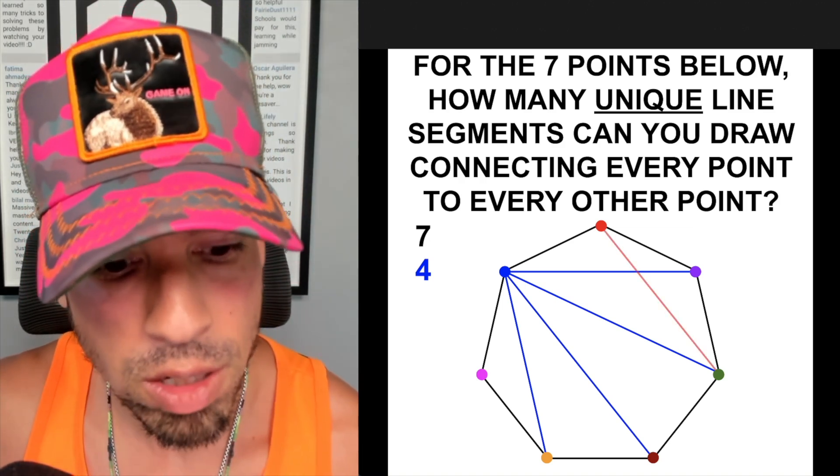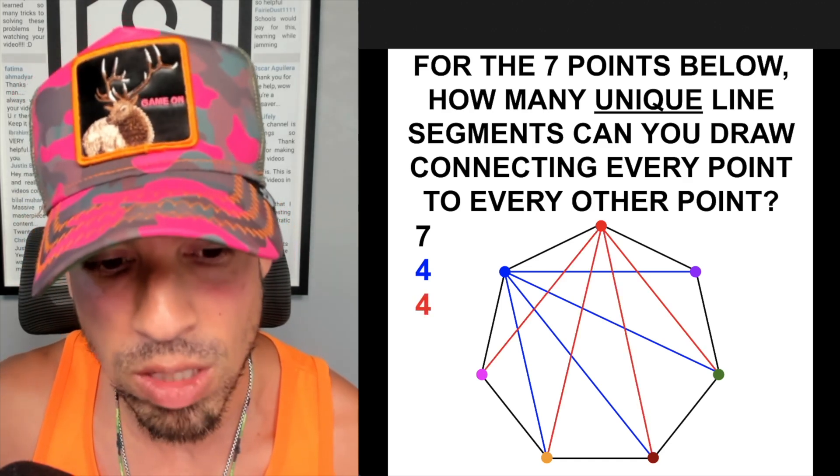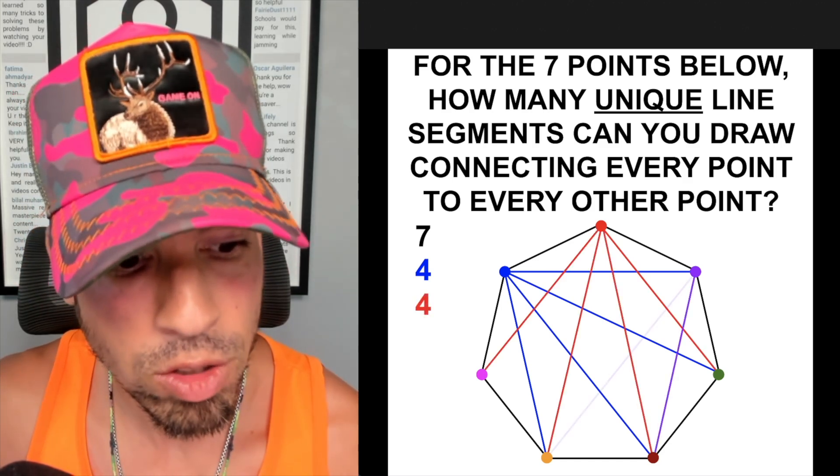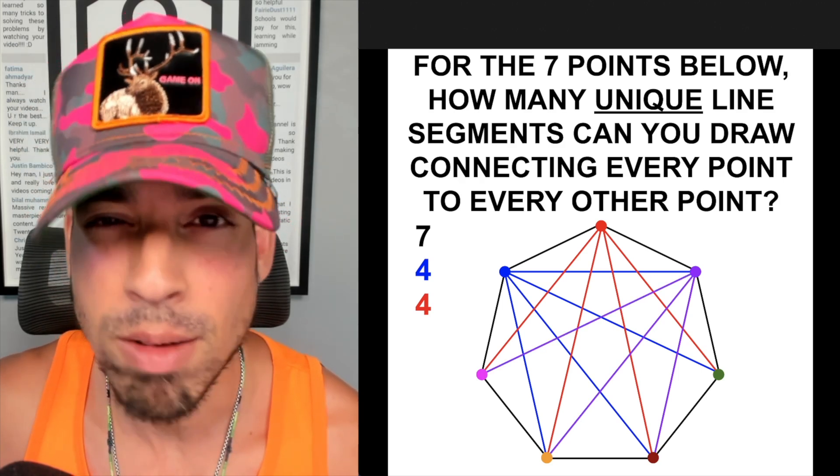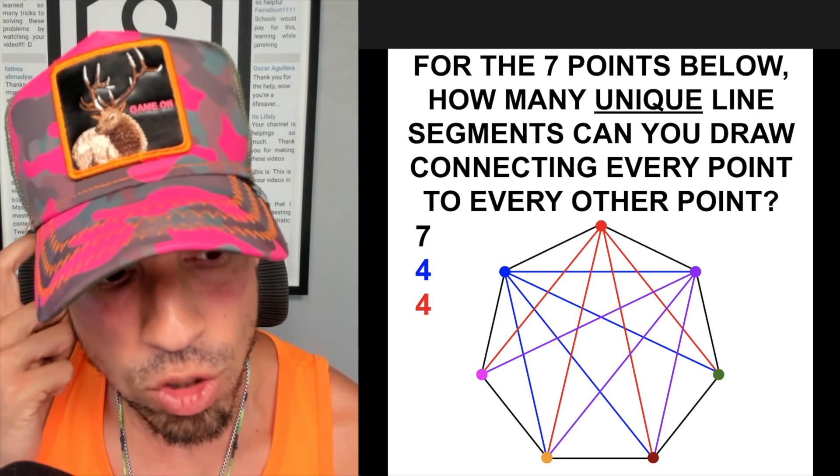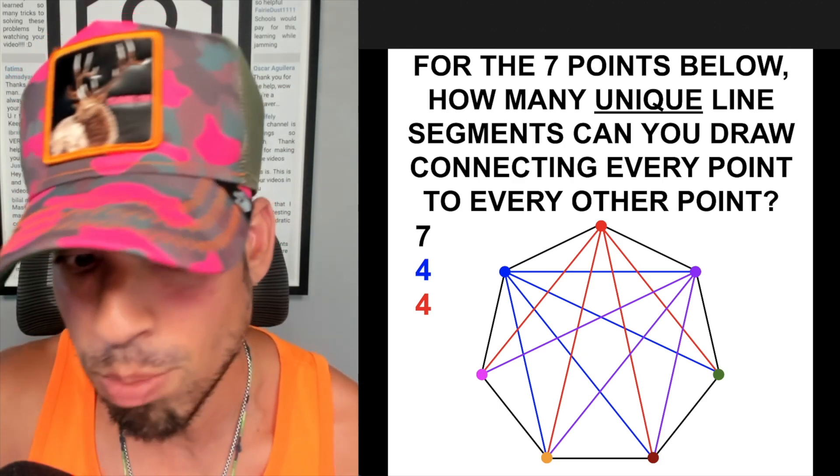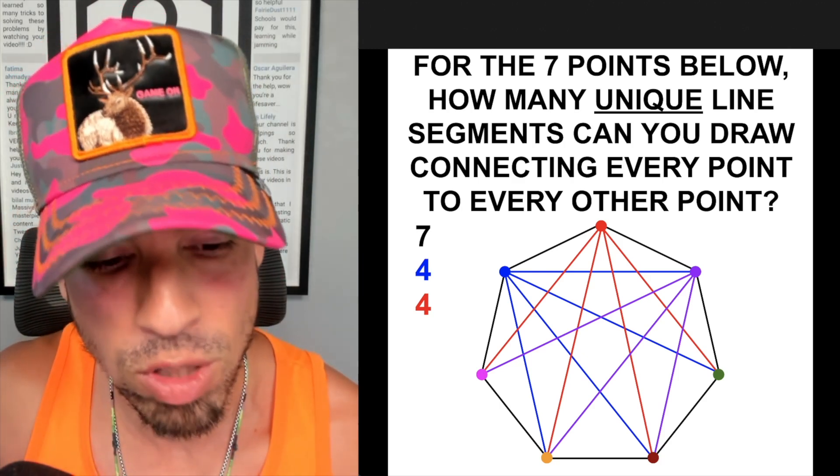So let's keep going around. Now we're going to go to the red dot and we're going to create again one, two, three, and four, and so there's another four. Now we go to the dark purple, we've got one, two, and three. We're not going to draw a fourth and the reason why is because the fourth line that would come from the purple line is already drawn from the blue dot over to the purple.